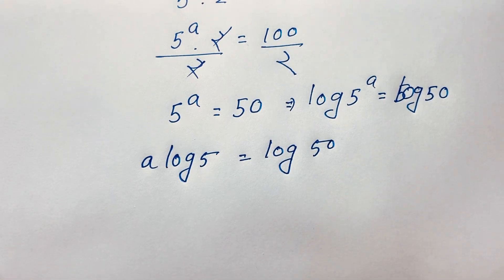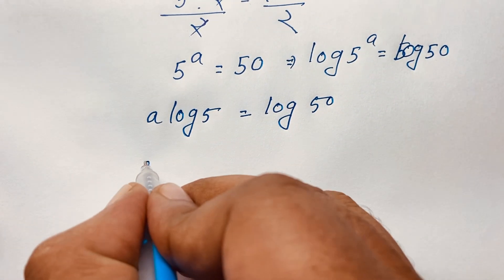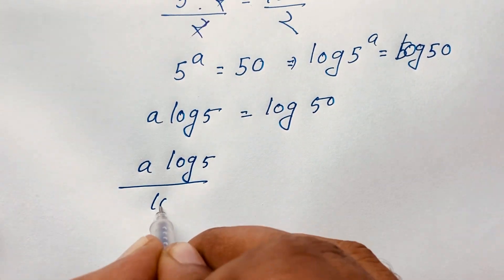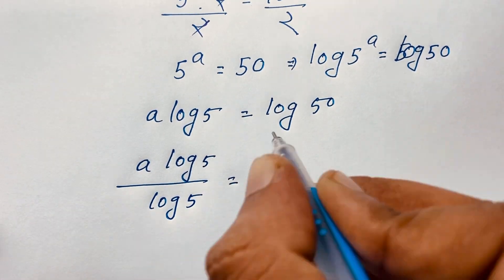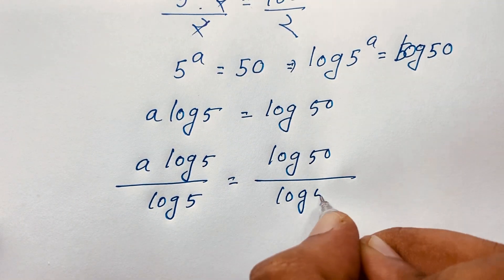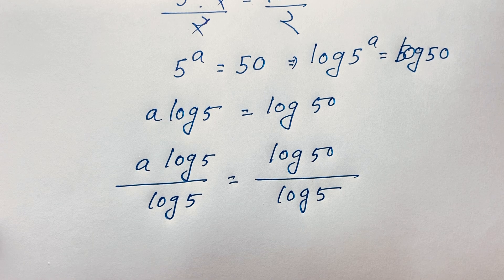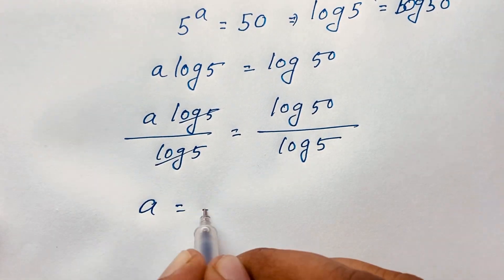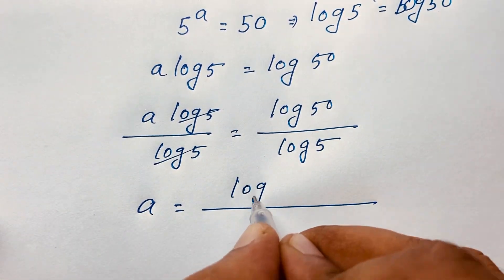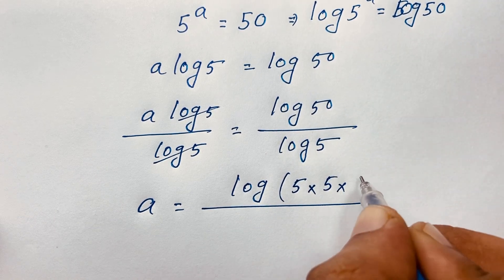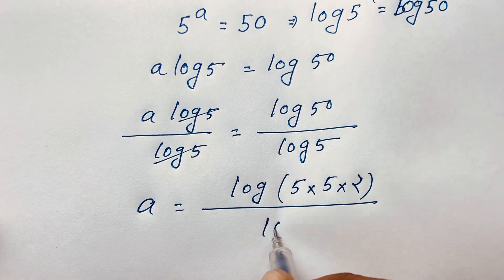Now, I divide both sides by log 5. So I can see this expression: a log 5 divide by log 5 is equal to log 50 divide by log 5. Now at this moment, you can see here log 5 and log 5 cancel out. We will find out a is equal to log 50 over log 5, and we know that 50 is 5 times 5 times 2.